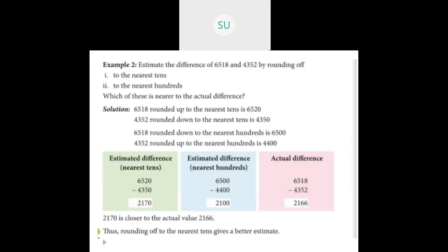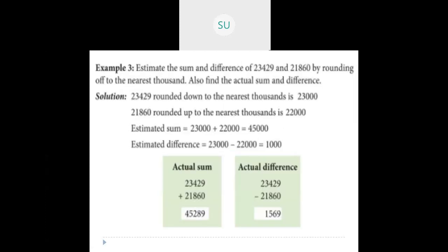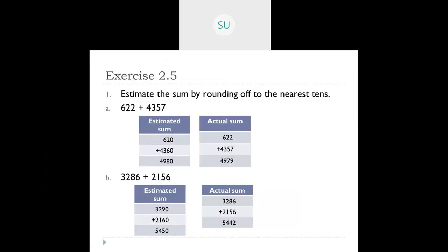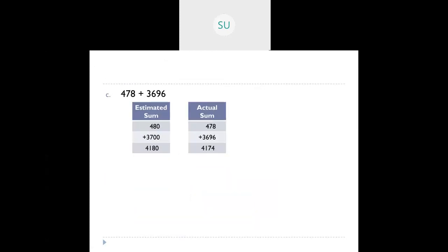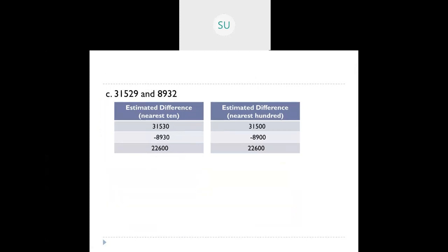We also saw that when you round off a number to the nearest tens, it gives you a closer estimate than rounding off to the nearest hundreds. Rounding off to nearest tens gives you a more accurate answer, closer to the actual sum or difference. We saw various examples and then covered Exercise 2.5 from your textbook.